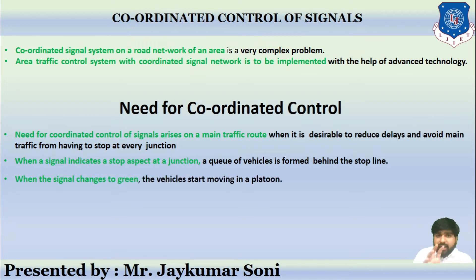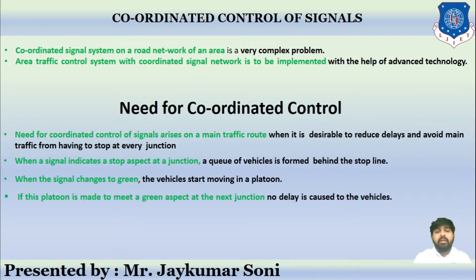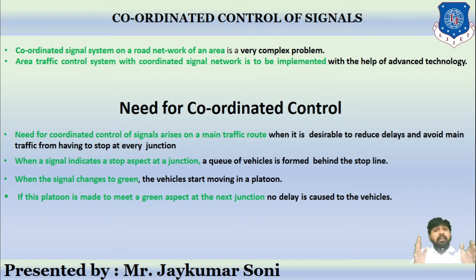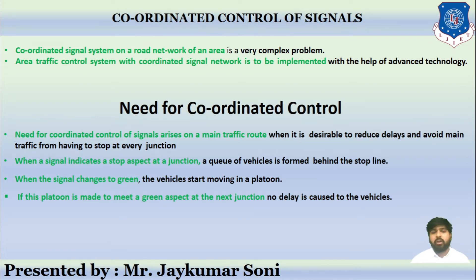When the signal changes to green, vehicles start moving in a platoon — meaning they start to move in a large group together. If this platoon is made to meet the green aspect of the next junction, no delays are caused. So if signals are placed such that when one shows red the next also shows red, and when one turns green the next also turns green, vehicles will have continuous platoon movement without stopping.